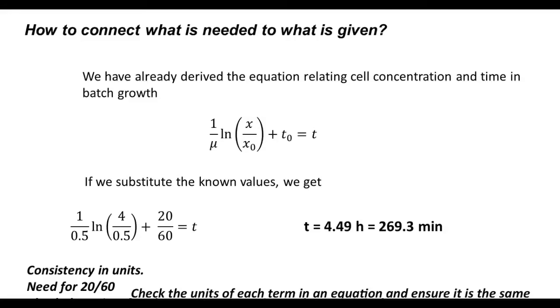If we calculate this left-hand side, we will get T equals 4.49 hours or 269.3 minutes. So, this is part A, the time that is required to reach a concentration of 4 gram per liter, starting with a concentration of 0.5 gram per liter, when the specific growth rate was 0.5 hour inverse.